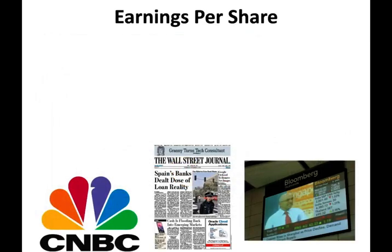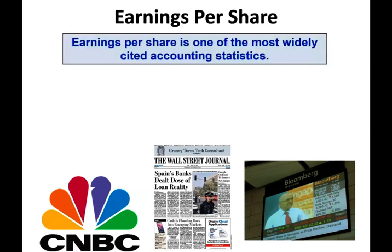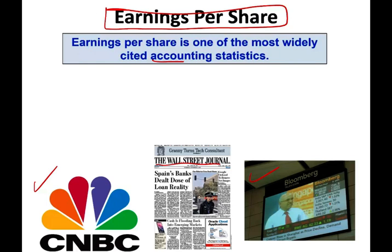Let's start with the first ratio, which is earnings per share. This ratio is one of the most quoted ratios in accounting as well as finance. If you watch CNBC, read the Wall Street Journal, or watch Bloomberg TV, earnings per share is constantly used as a measurement for the company's performance. So let's first understand how we compute earnings per share and what it means, because we're going to use this number to compute another important number — the price-earnings ratio.